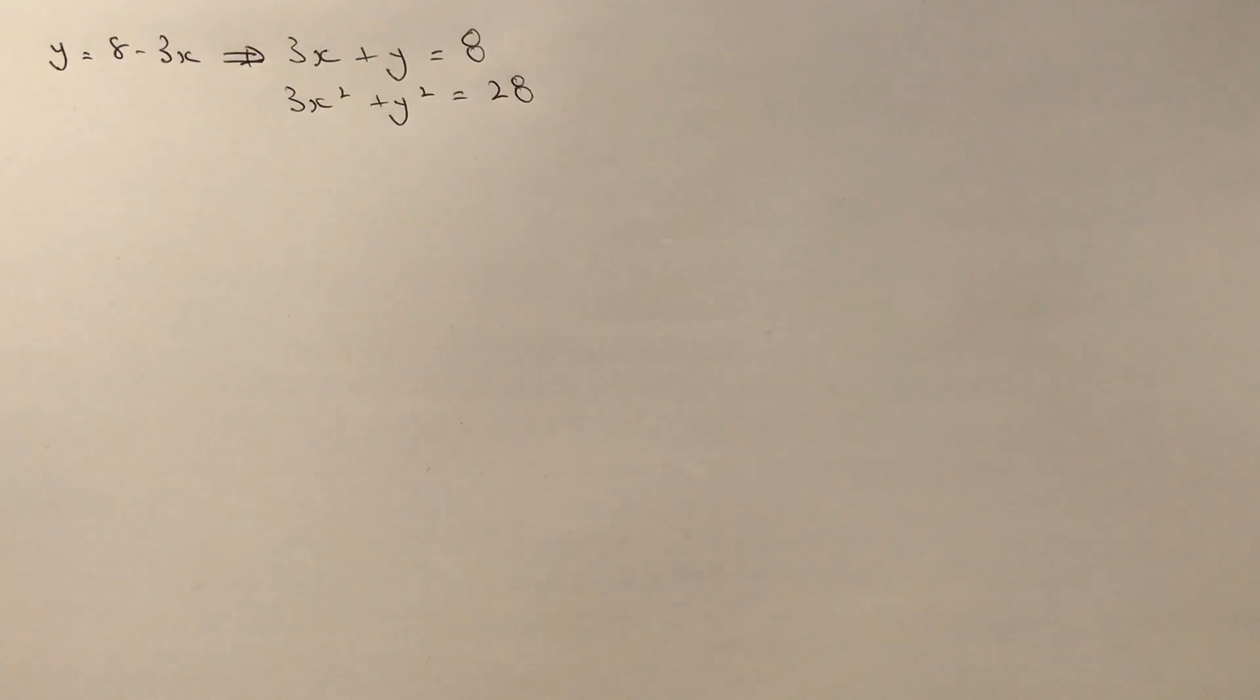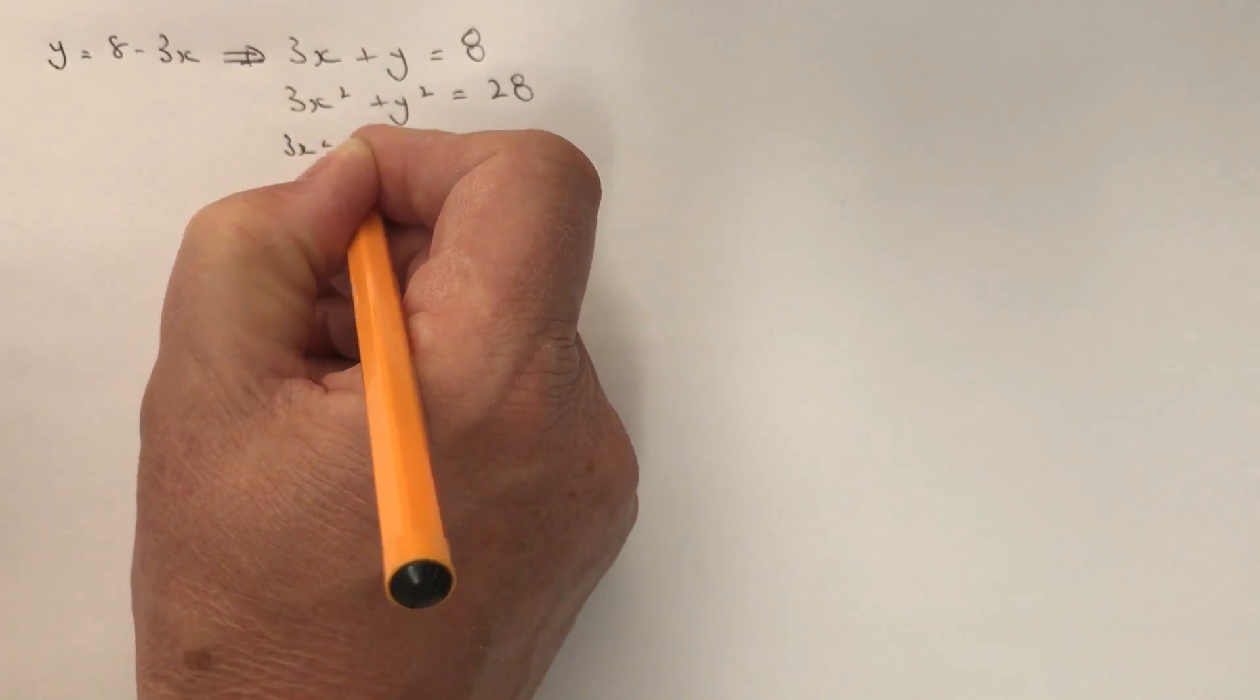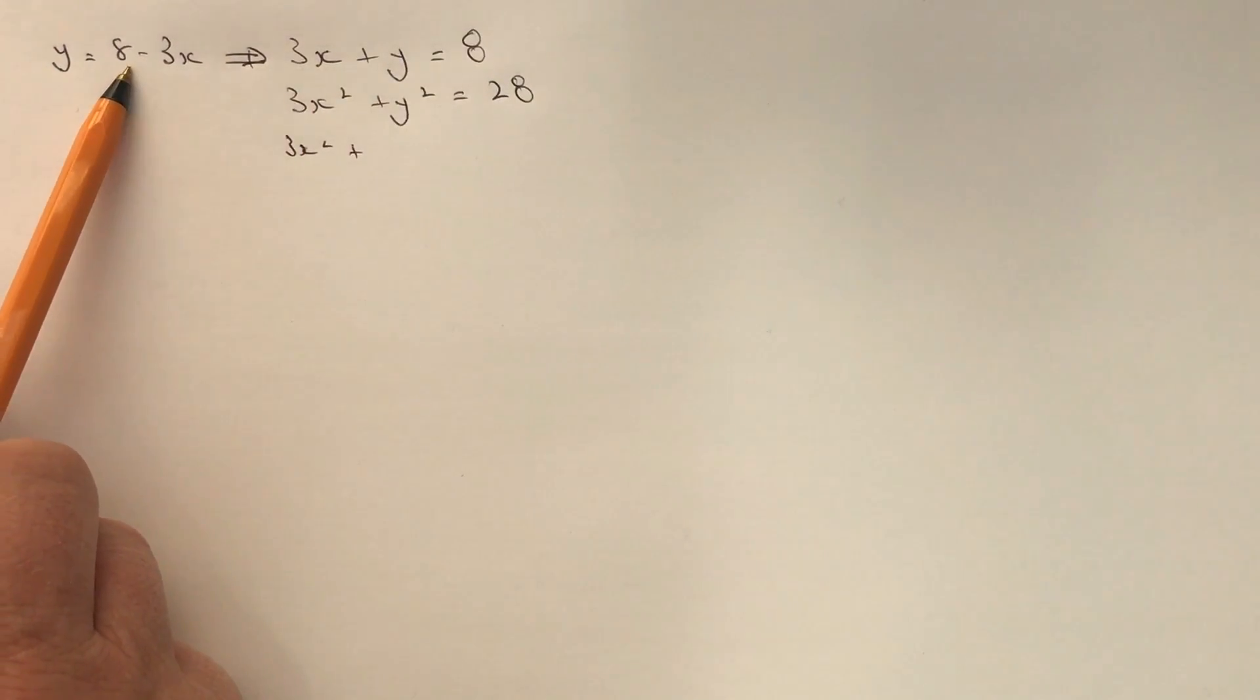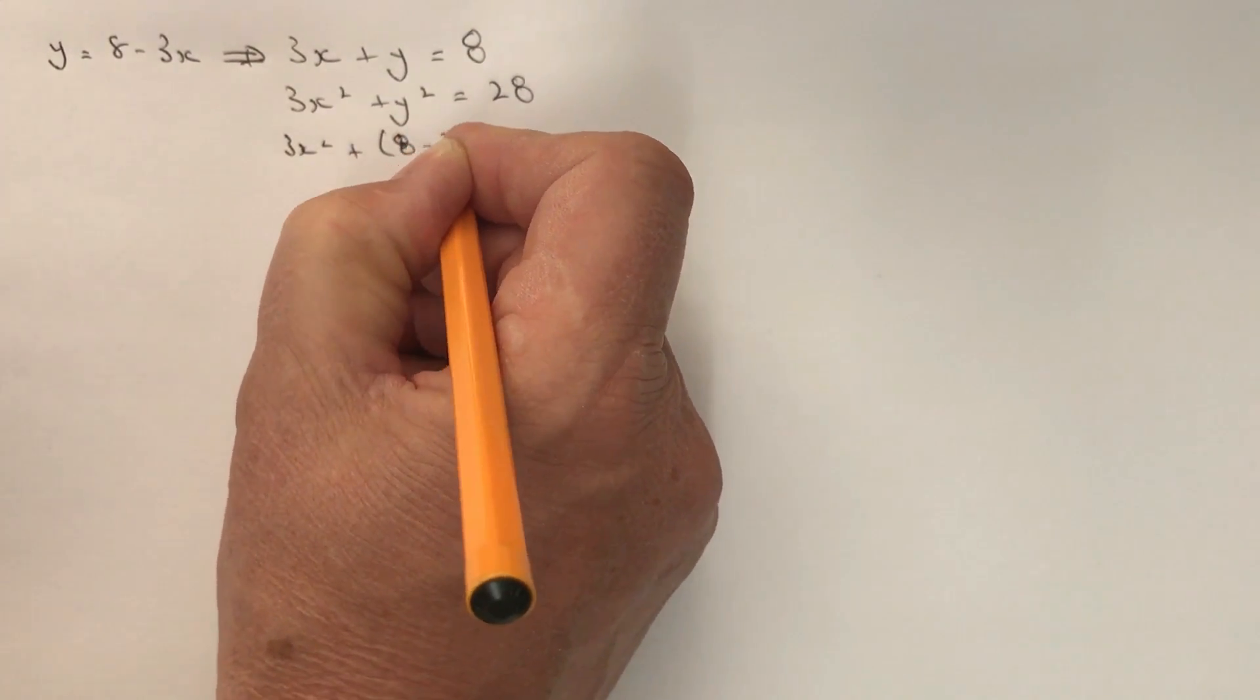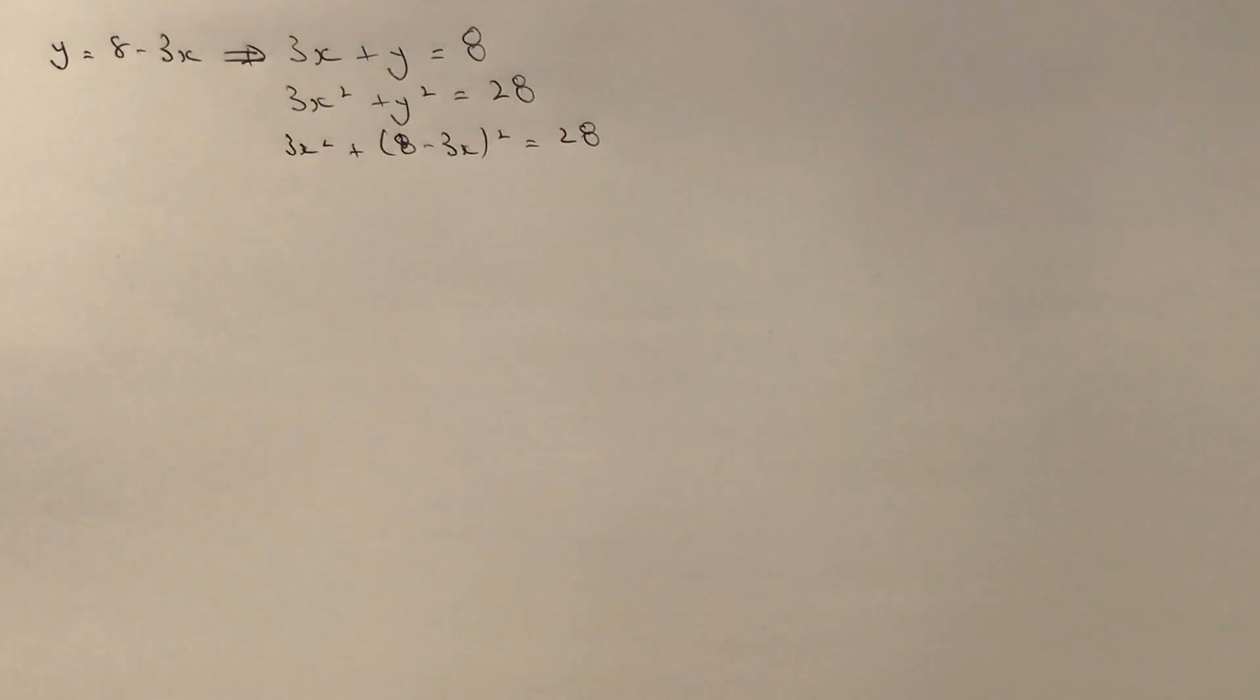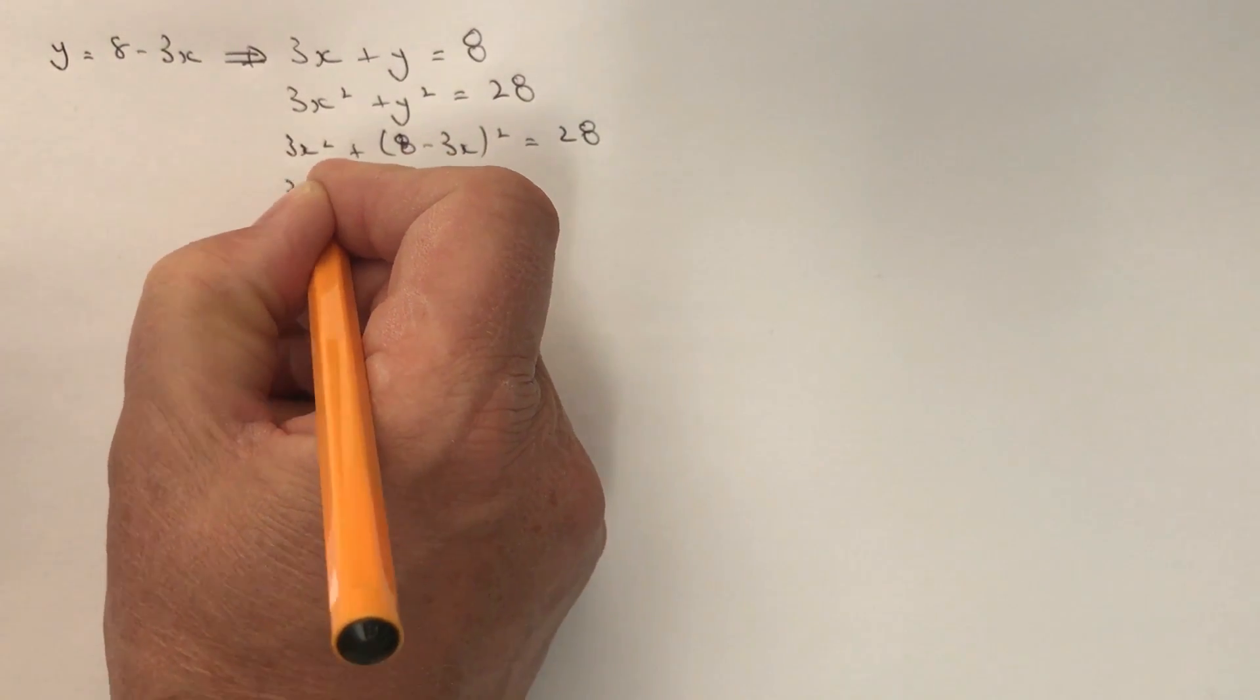Then we're going to take that y value and put it into the second equation. So if I rewrite the second equation, what I actually end up with is 3x squared plus, and rather than writing y squared, I'm going to write 8 minus 3x squared. So if I put that in brackets, I get 8 minus 3x squared, and that all equals 28.